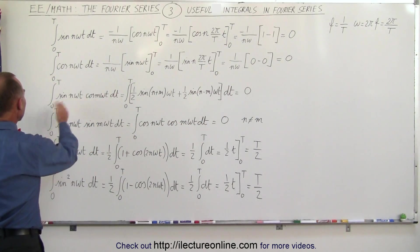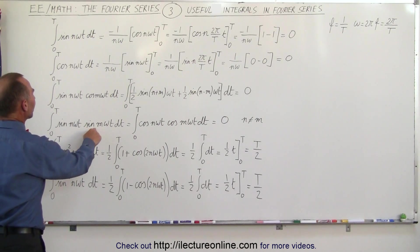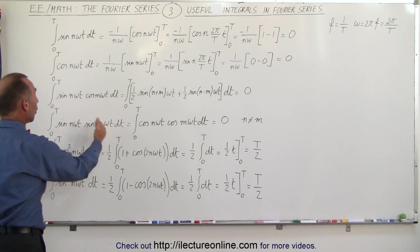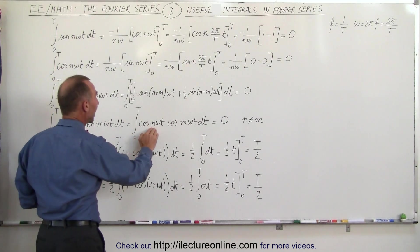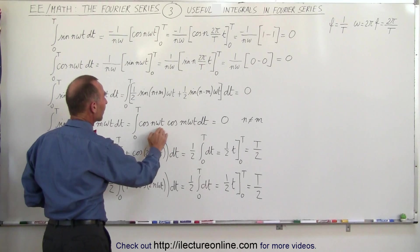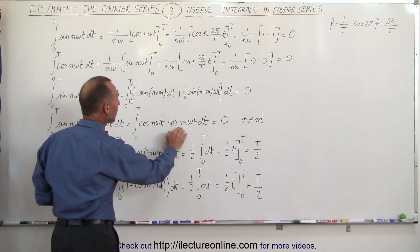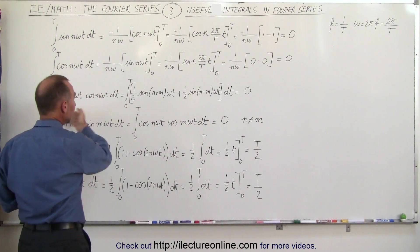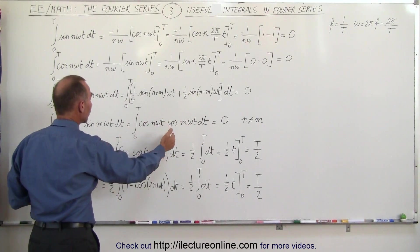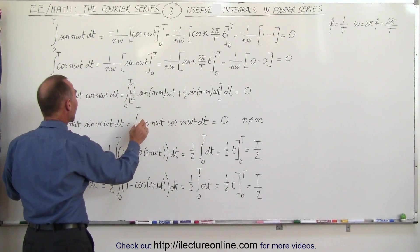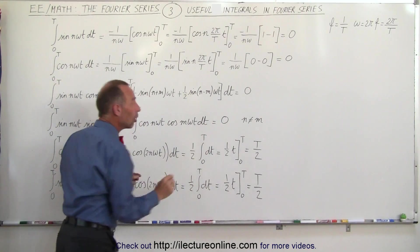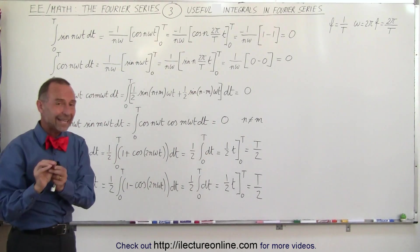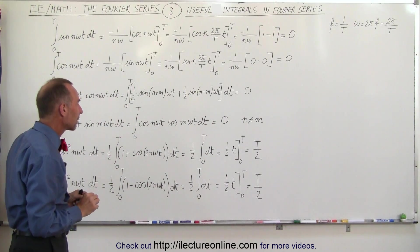Taking the integral of the sine of n omega t times the sine of m omega t, or the cosine of n omega t times the cosine of m omega t — if we work these out, you will find that they equal zero as long as n does not equal m.